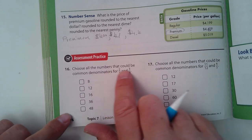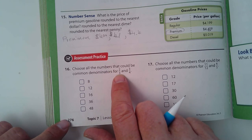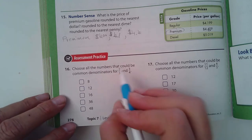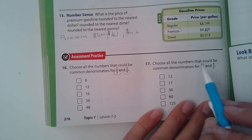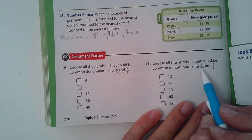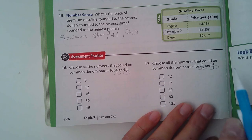Choose all the numbers that could be common denominators for two-thirds and three-fourths. So you're looking for a common denominator for three and four. Same thing: choose all the numbers that could be common denominators for eleven-twelfths and four-fifths. So looking for a common denominator for twelve and five.